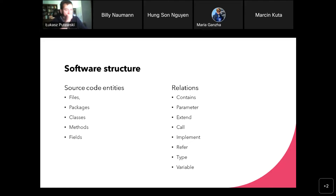The type relation is between either a field or method to a type, meaning the type of the field or the return type of the method is referenced by these relations. The last relation used in this research is variable — it connects a method with a type, meaning that within the body of this method, a variable of this specific type is instantiated. This is the model, the structure of the source code, and as you can see it is a huge simplification of the actual source code and of actual program behavior.